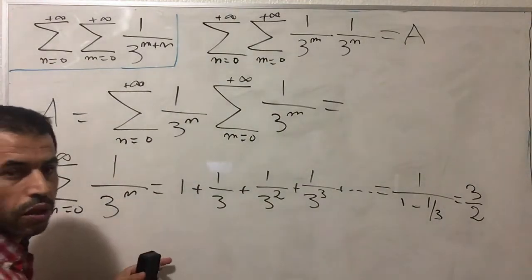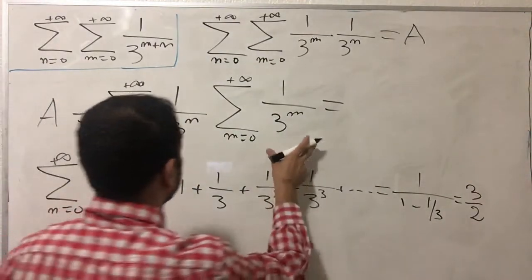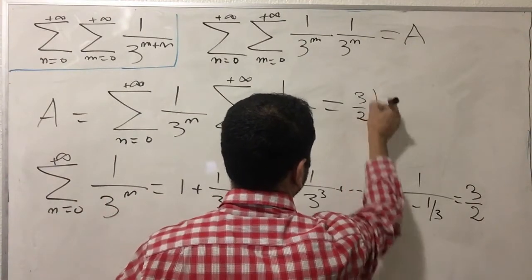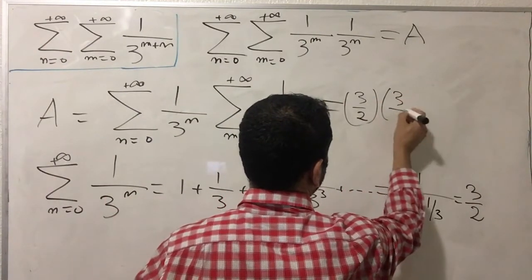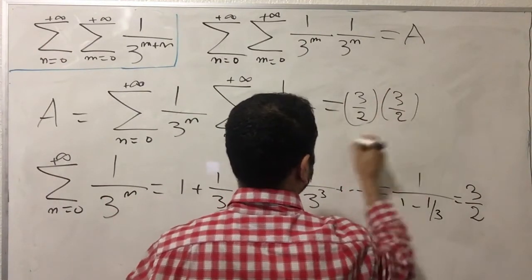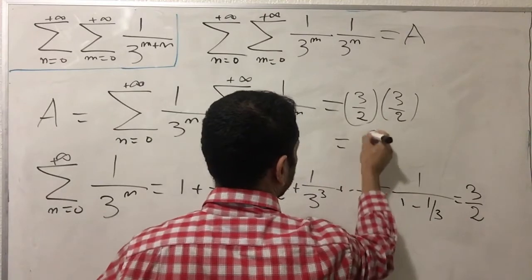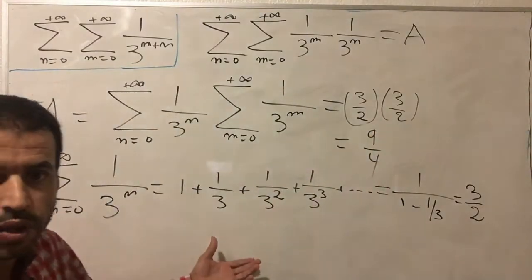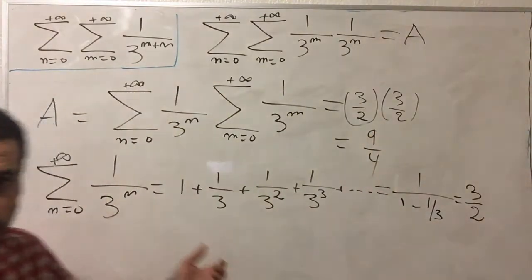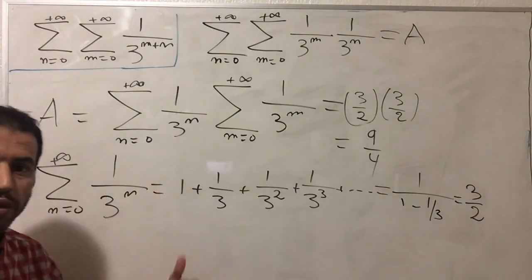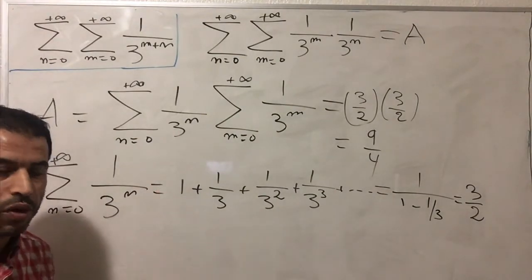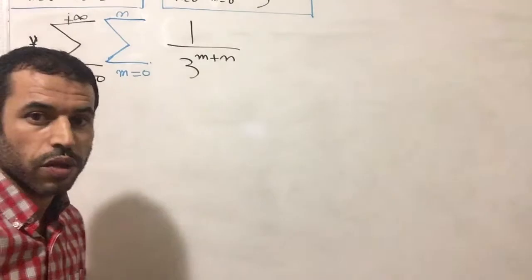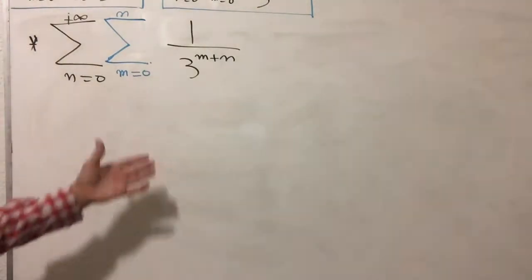So now both sums each equal 3/2, and multiplying them together gives us 3/2 times 3/2, which is 9/4. The first double sum evaluates to 9/4. Now let's move on to the second sum.